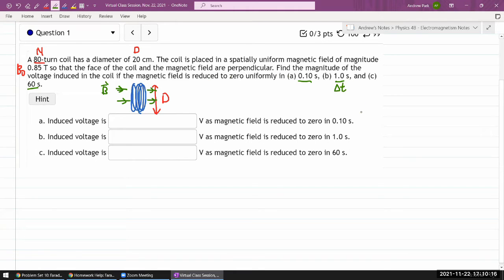And so this looks like a straightforward application of Faraday's law, which says that the line integral of E dot DL, this circle indicated in the closed loop integral, is given by minus time derivative of the magnetic field, the magnetic flux.